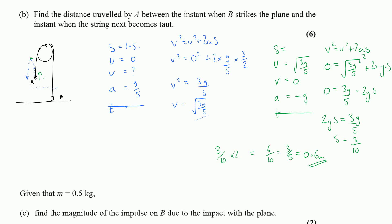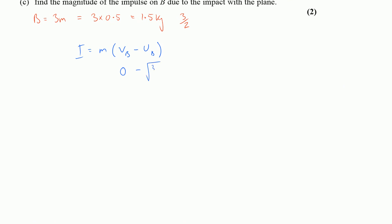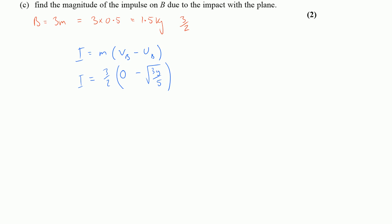So impulse = (3/2) × (0 − √(3g/5)) = −(3/2)√(3g/5). Since we want the magnitude, the answer is (3/2)√(3g/5). Typing this into a calculator gives 21√3/10, or to 3 significant figures, 3.64 newtons.